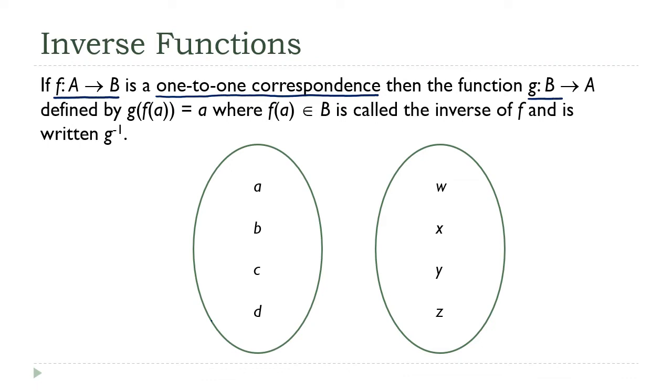Then the function going from B back to A that has this special property here, g of f of a is equal to a. It's called the inverse of f, and it's written g with this superscript negative one, just like you're used to seeing.